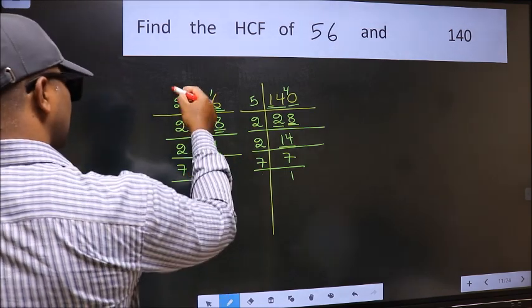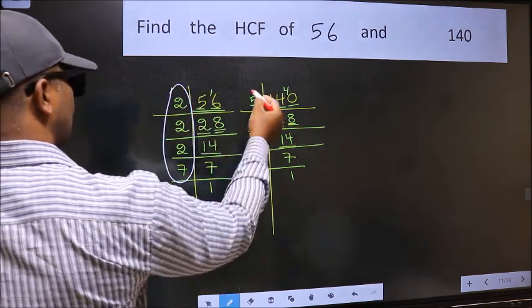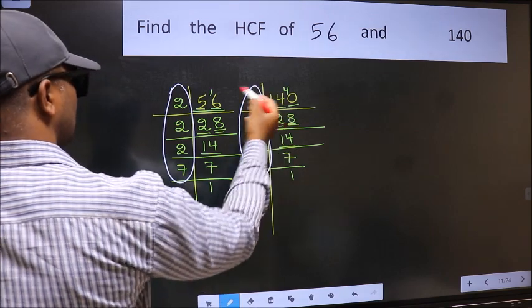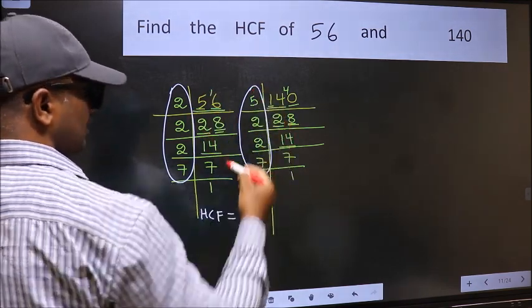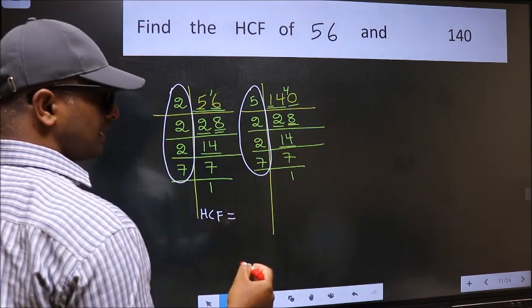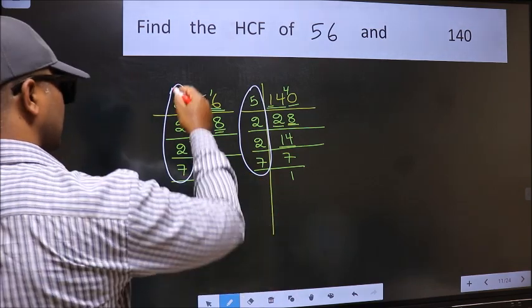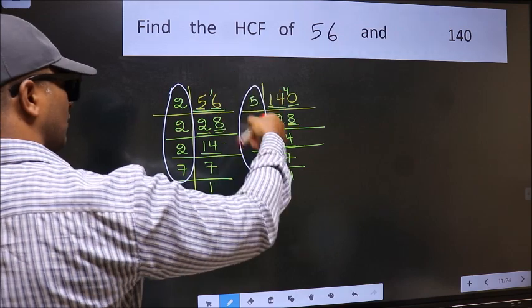That is here and also here, here and also here. So now let us find the numbers which should be present here and also here.